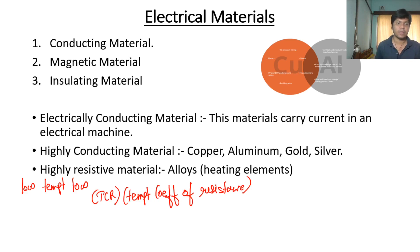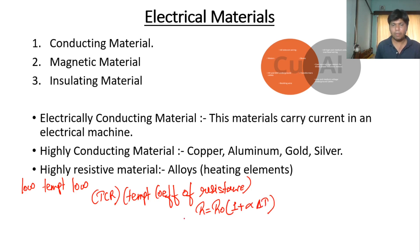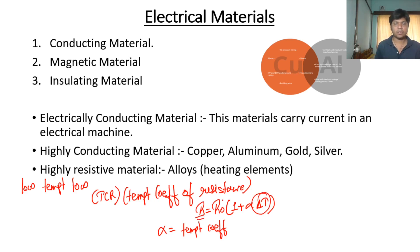The formula for temperature coefficient of resistance is: R = R₀ × (1 + α × ΔT), where α is the temperature coefficient of resistance, ΔT is the change in temperature per degree Celsius, R is the final resistance, and R₀ is the initial resistance. That's all about the temperature coefficient of resistance of any material.